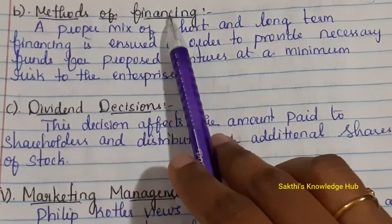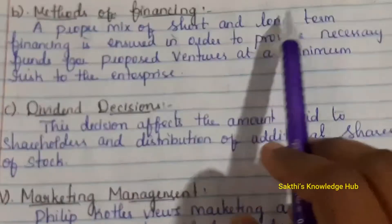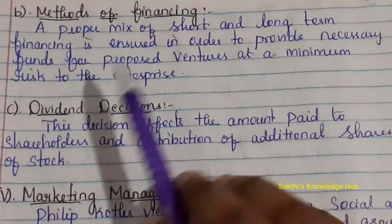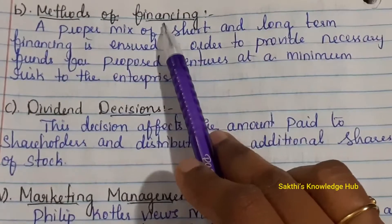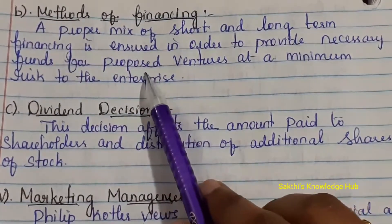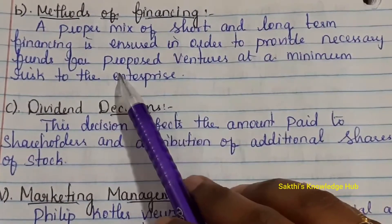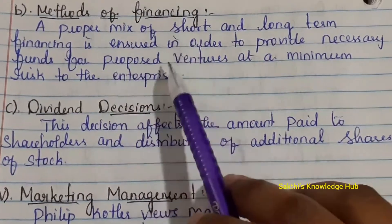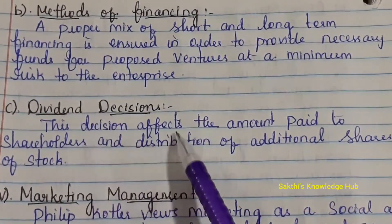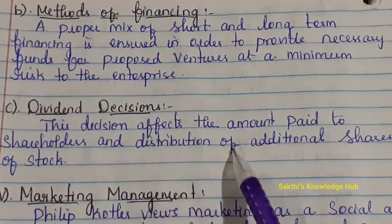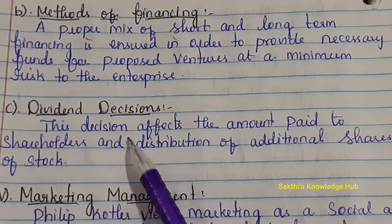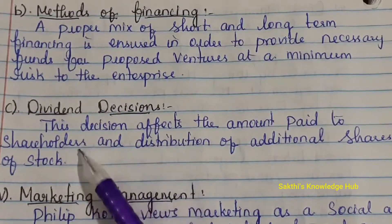The second financial decision is the method of financing — ensuring a proper mix of short and long-term financing to provide necessary funds for proposed ventures at minimum risk to the enterprise. What methods are available and which is best suited for the organization are determined here. The final decision is the dividend decision, which affects the amount paid to shareholders and distribution of additional shares.